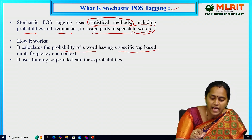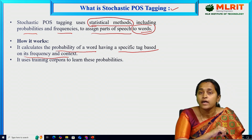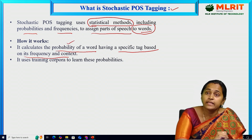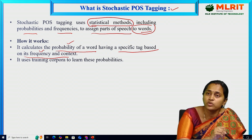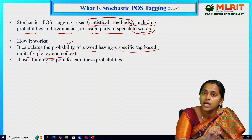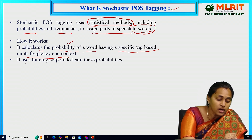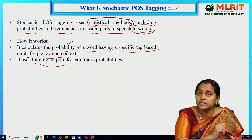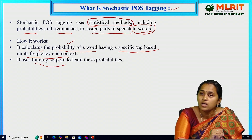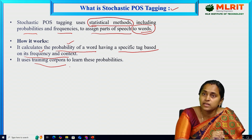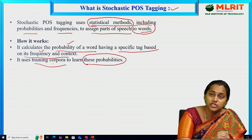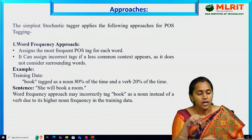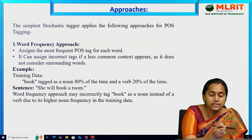It assigns words to specific tags based on the frequency of that particular word — suppose 80 percent, 20 percent, or 50 percent — based on frequency it will assign the POS to the word. It uses training corpora. We already discussed what corpora is: it is like a database that contains some data. To get these probabilities we use the training corpora. Now let's see the approaches — this stochastic tagger applies the following POS tagging approaches.